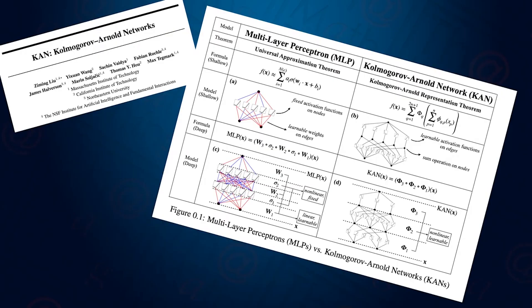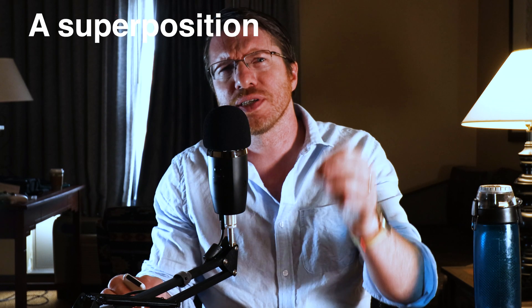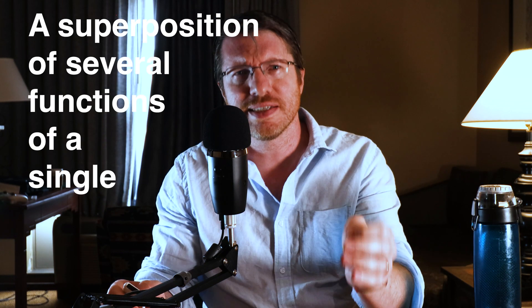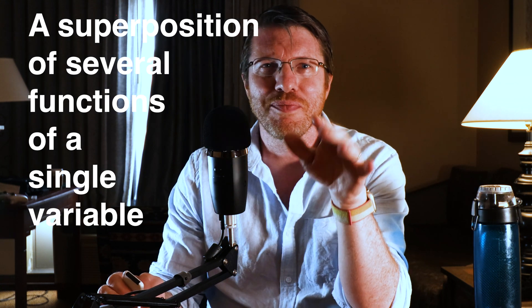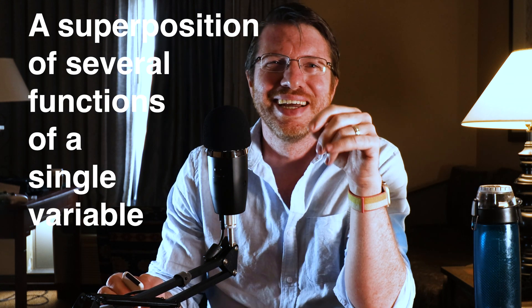So last time we talked about the curse of dimensionality, and by looking at the Kolmogorov-Arnold representation, we saw how we could take a function of several variables and write it as a kind of superposition of several functions of a single variable. Did I say that right? I gotta make sure I put those modifiers in the right spot.